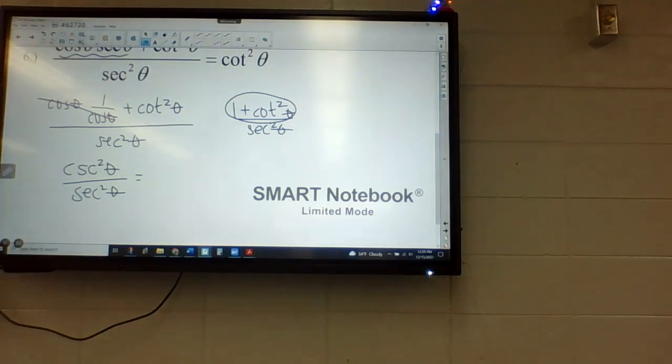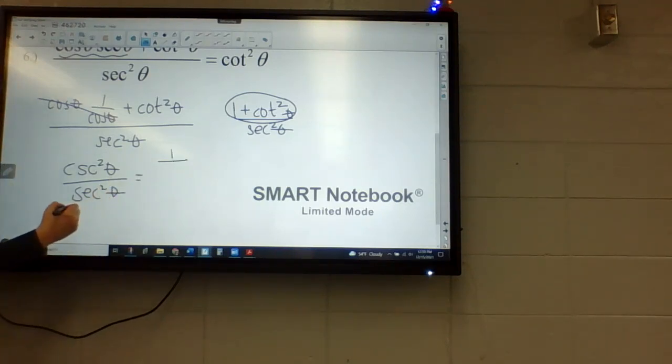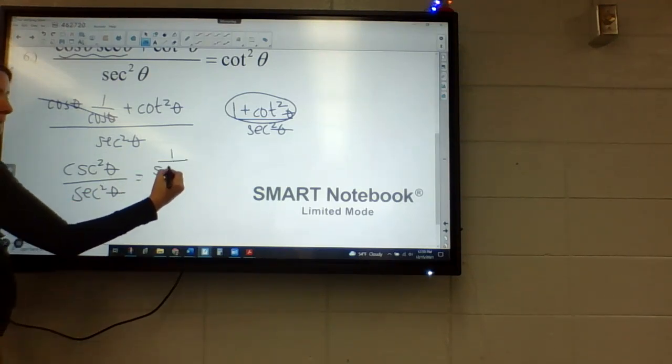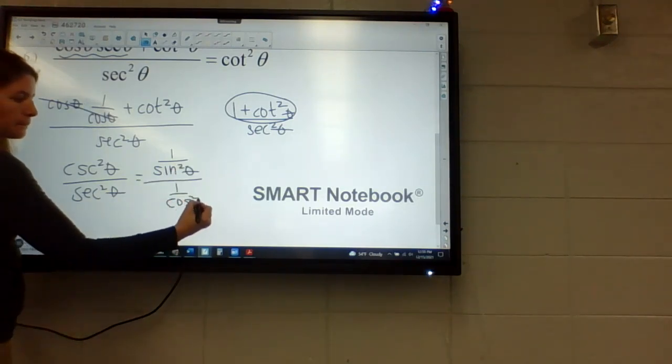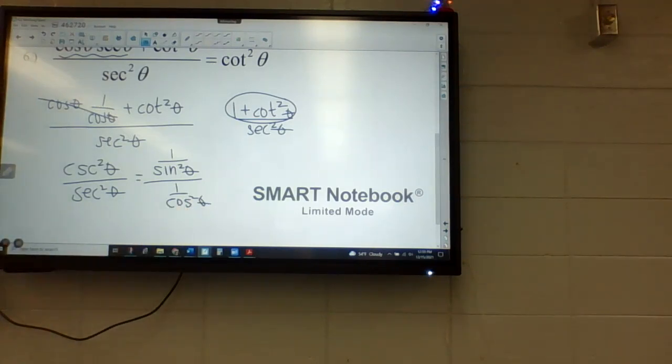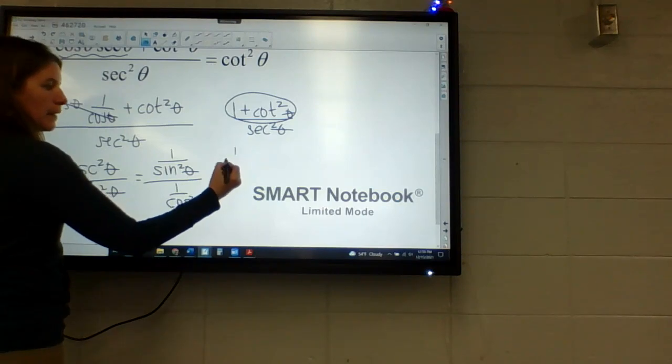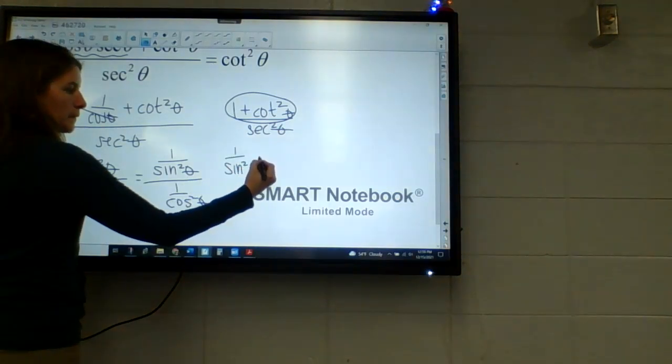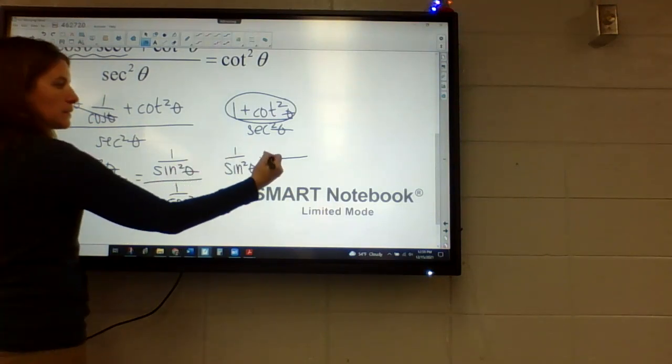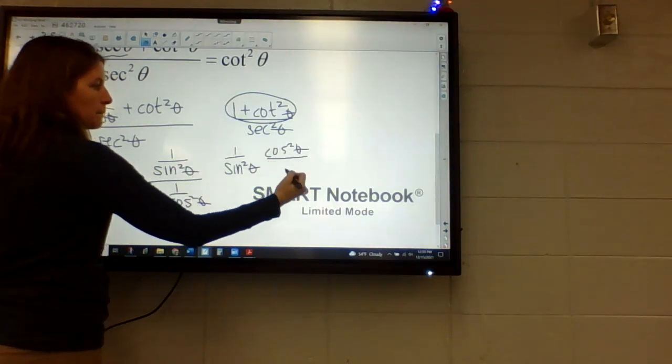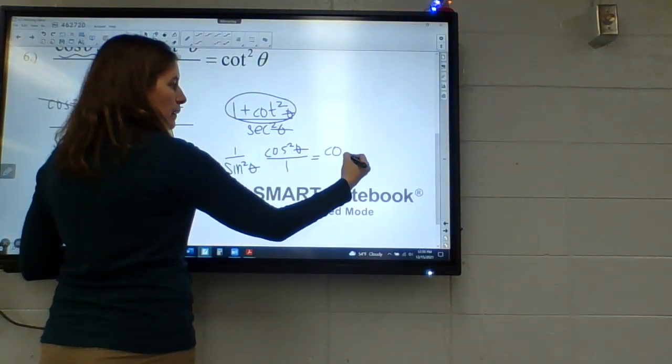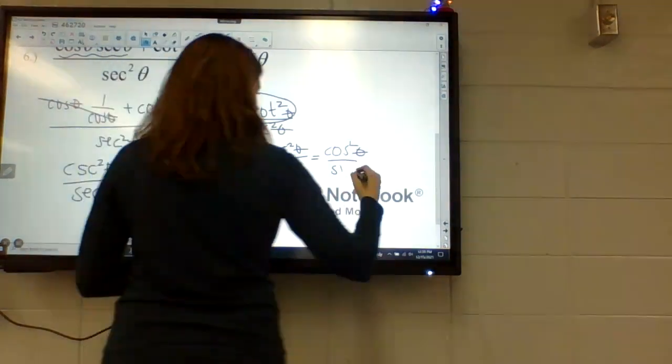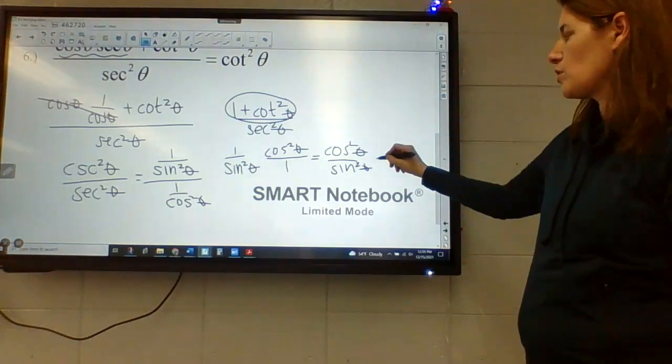What do you know, Sam? Cosecant is one over what? Secant is one over cosine. So keep switch flip. So this flips. And so then I'm left with, which is just cotangent squared.